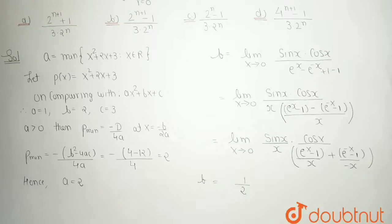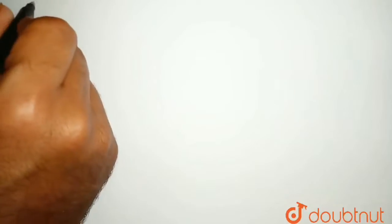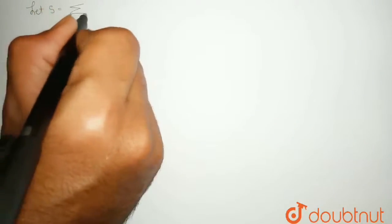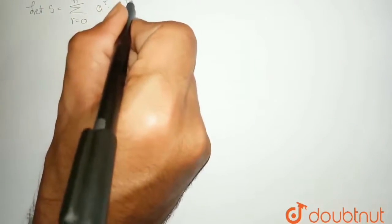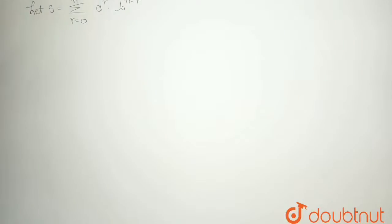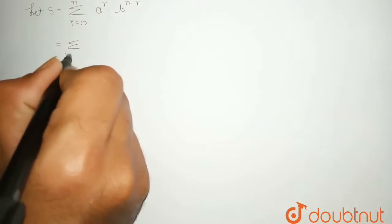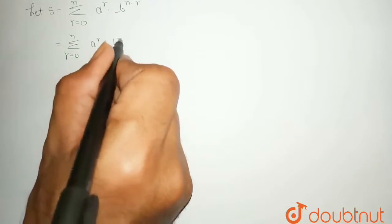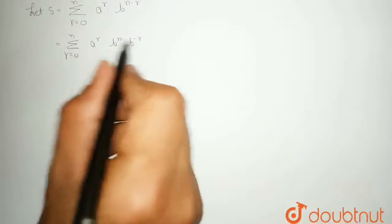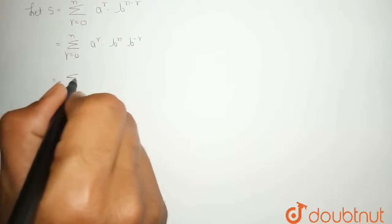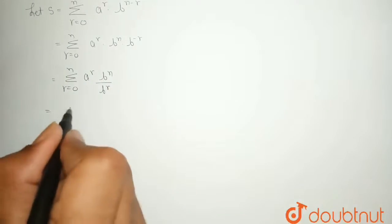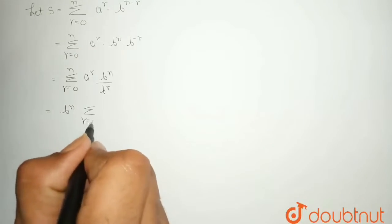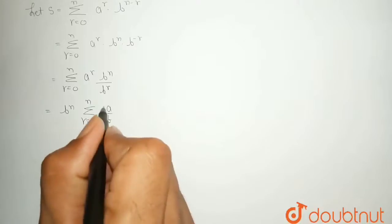Now substitute both values into the given summation. Let S = Σ (r=0 to n) a^r · b^(n−r). Rewriting: S = Σ a^r · b^n · b^(−r) = b^n · Σ (a/b)^r. Since b^n is a constant, it can be taken out of the summation.